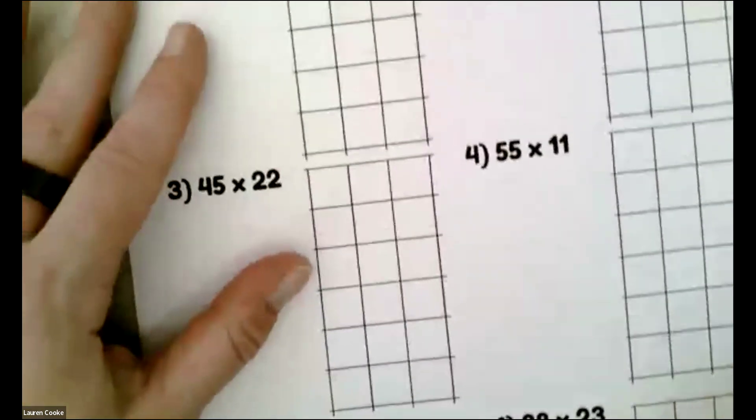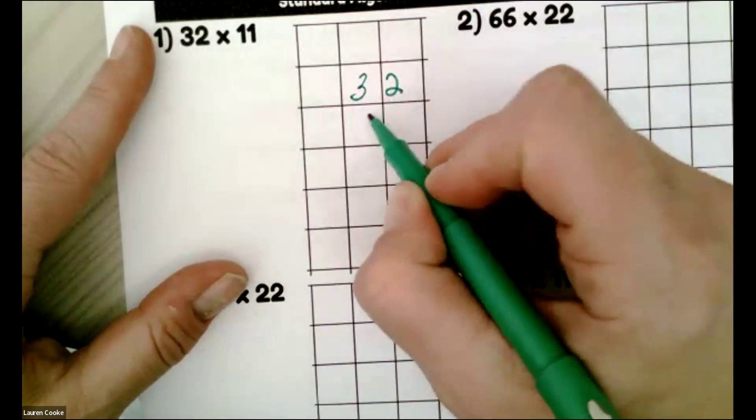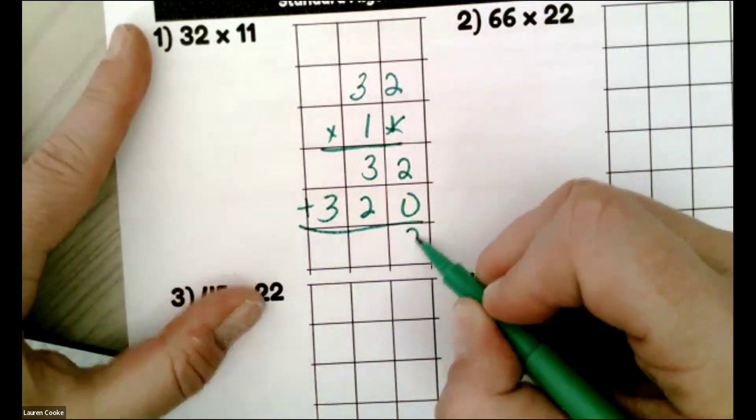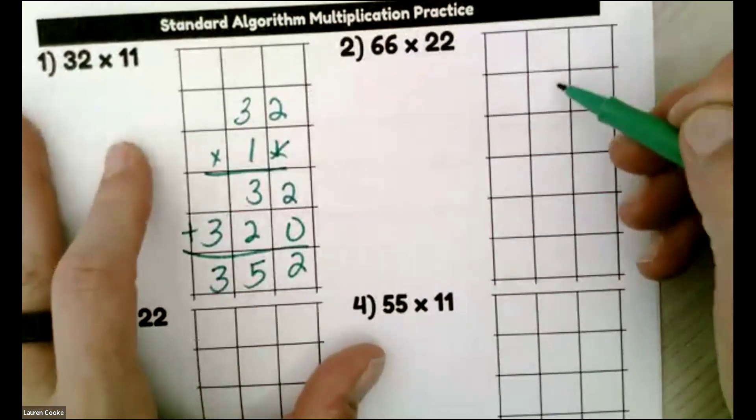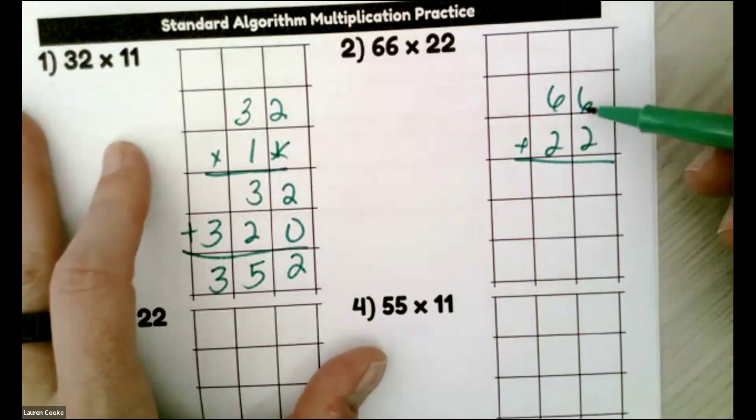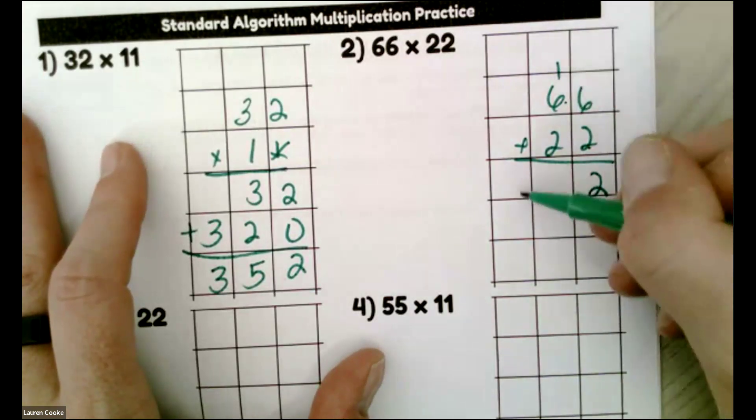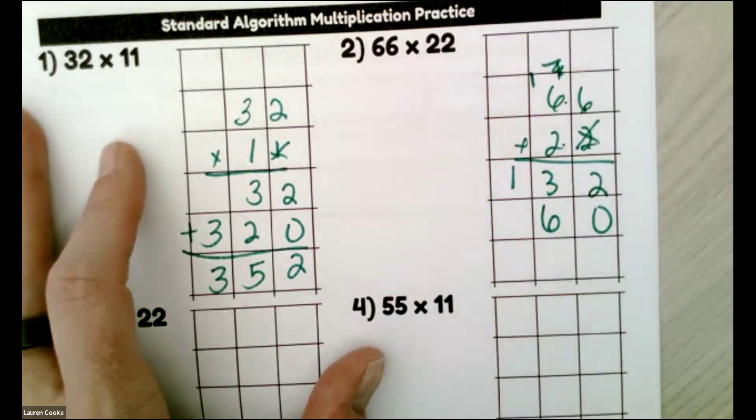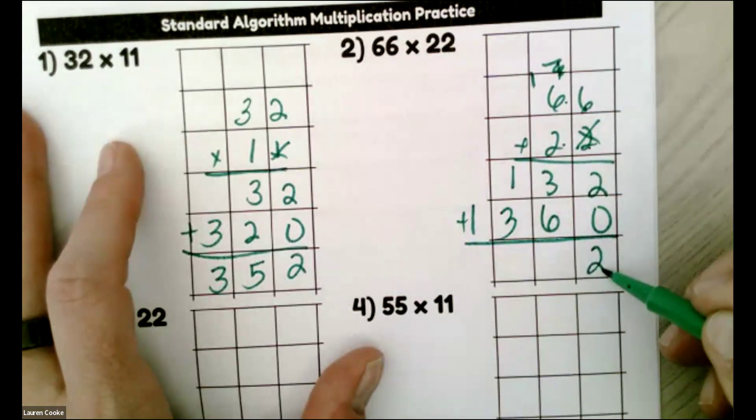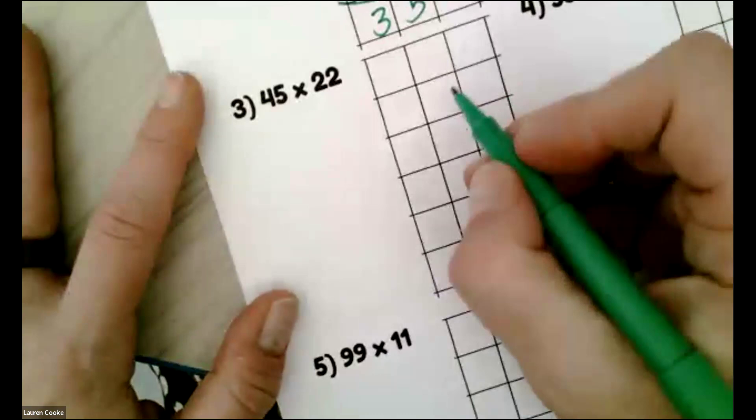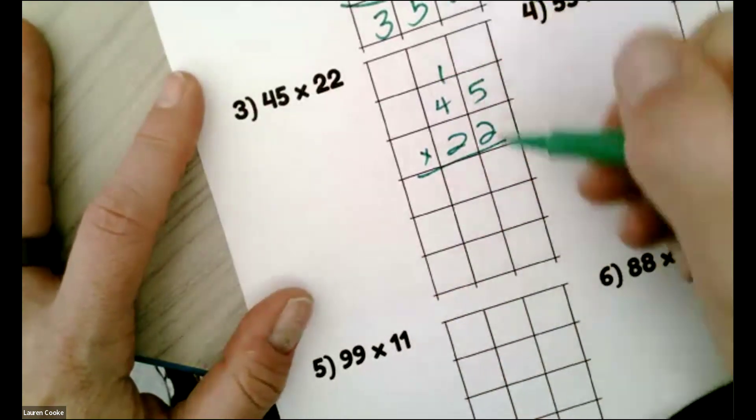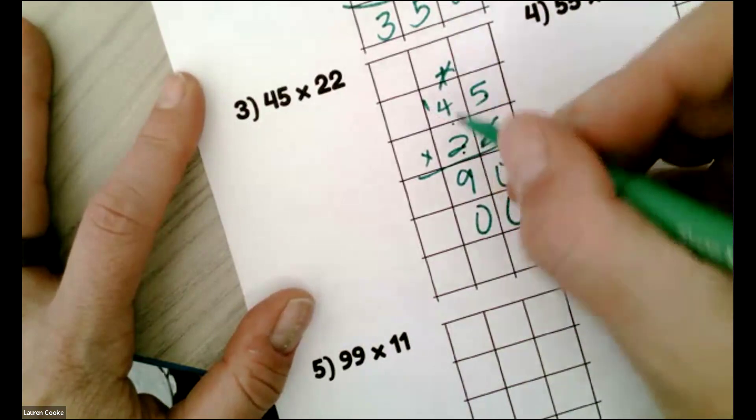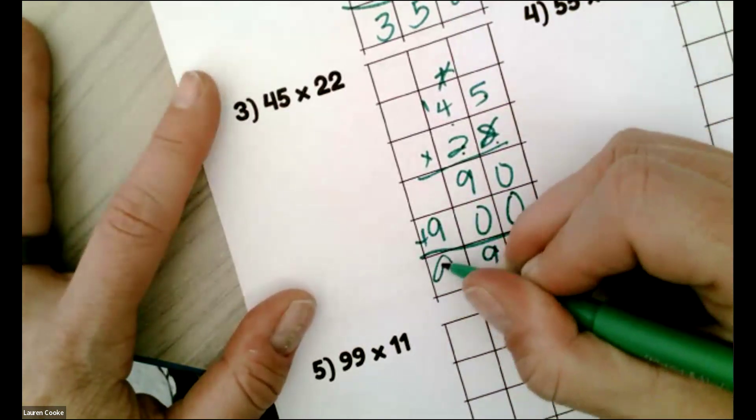We do have some standard algorithm multiplication practice. We're just going to fly through it because I gave us some numbers that we can work with and there is no renaming, but I'm excited to work on renaming on Friday. 66 times 22. Six times two, that is 12. I do have to rename there. Two times six, 12, 13. And X, one, zero. Goodbye. Two times six is 12. Splitting it up again. Two times six is 12 plus one more, 13. 2941. 45 times 22. 10, 8, 9. Done. Zero. Two times five, 10, 8, 9. Zero, nine, nine.